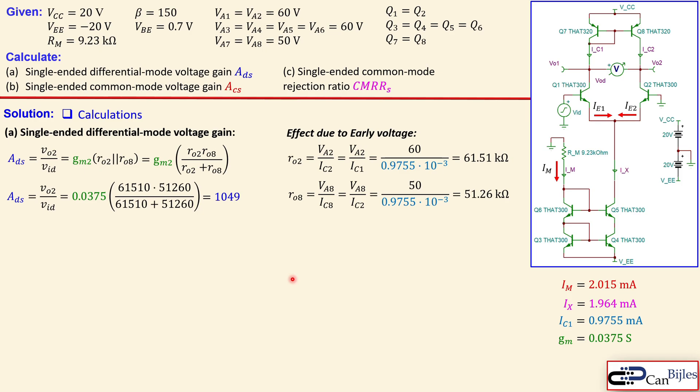And you get now here 1049. So it is quite high. So we had actually in the previous examples around 370 or 380. And this is almost three times larger. So you see that is quite an improvement.